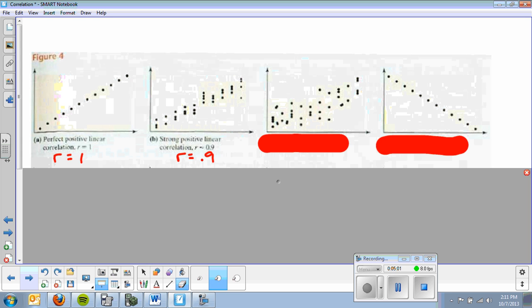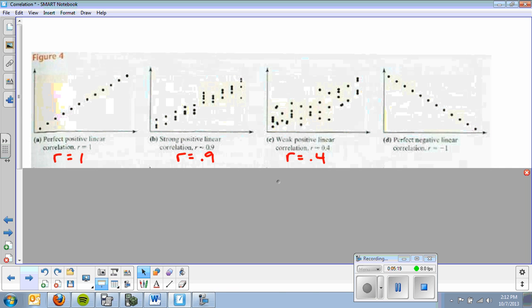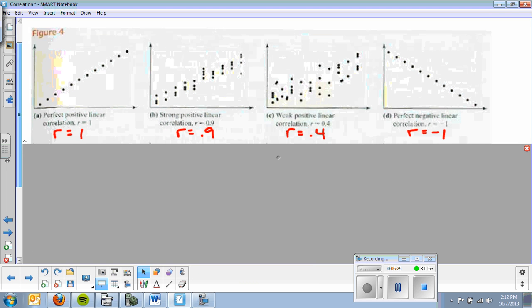In the next example, the dots become more spread out, so we call that a weak positive linear correlation. That's r equals 0.4. You can see that number getting closer to 0. Now, we go to the negative side of things. We have a straight line that's negative, so it has a perfect negative linear correlation. r equals negative 1.